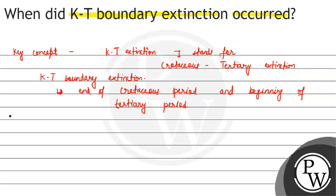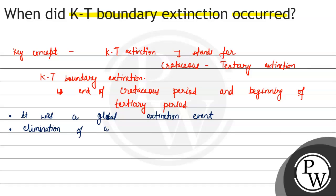And what is it? It is a global extinction event. It involved the almost complete elimination of about 70% of the species living on the earth at the time — meaning 70% of living species were wiped out.